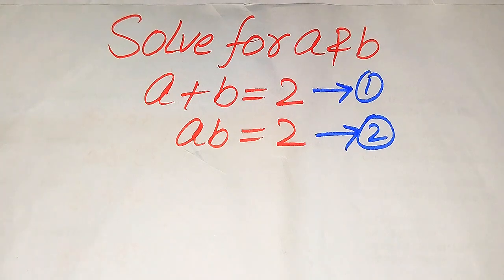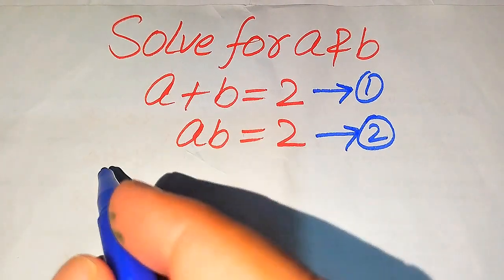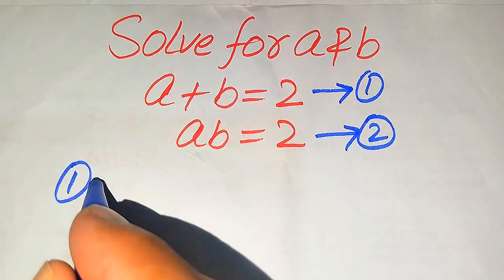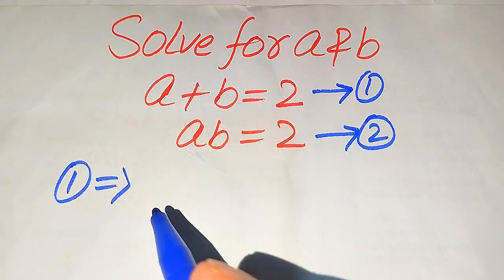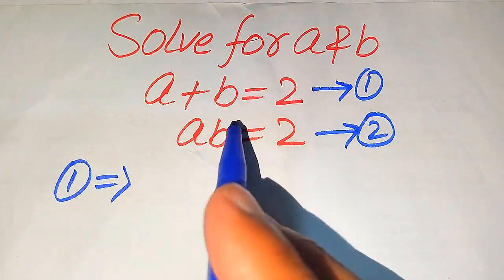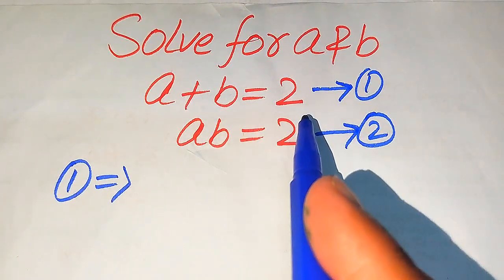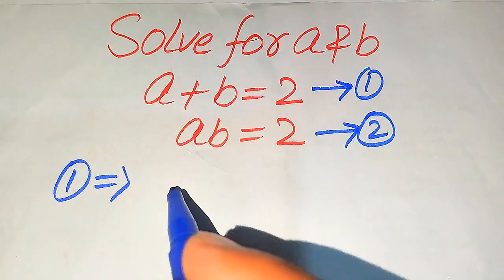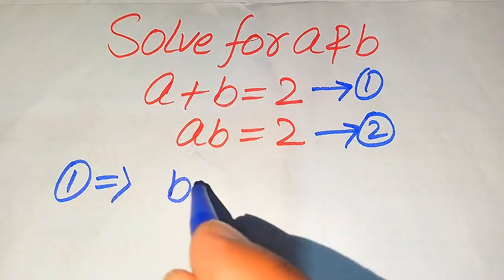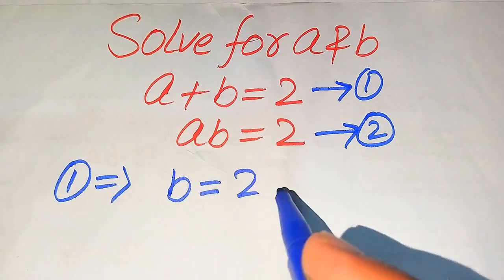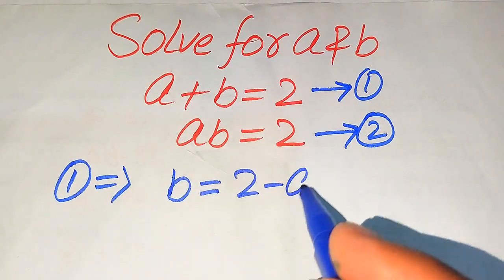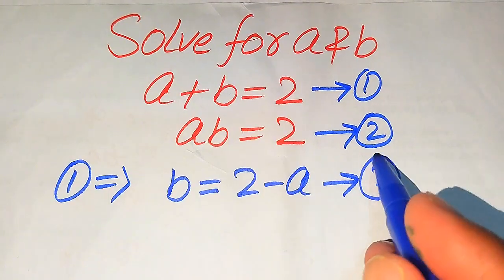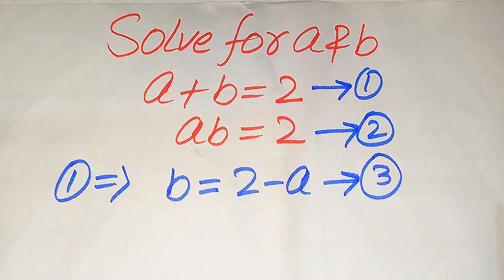First we focus on equation number 1, which states a plus b equals 2. We move a to the right-hand side, giving us b equals 2 minus a, and we call this equation number 3.